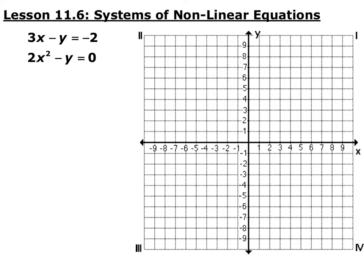Section 11.6 is systems of nonlinear equations. So everything we've talked about so far is systems of linear equations — everything in the system has been a line. Now we're going to talk about systems where at least one of the equations is not a line.